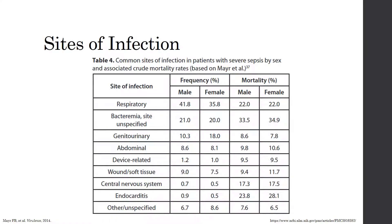This table from a 2014 study on the epidemiology of severe sepsis displays the various sites of infection that may lead to the development of sepsis. These sites include respiratory, bacteremia, genitourinary, abdominal, wound or soft tissue, and several others. Based on this data, the most frequent site of infection is the respiratory tract, followed by bacteremia. However, when looking at percent of mortality, the highest mortality rate occurs with bacteremia, followed by endocarditis.